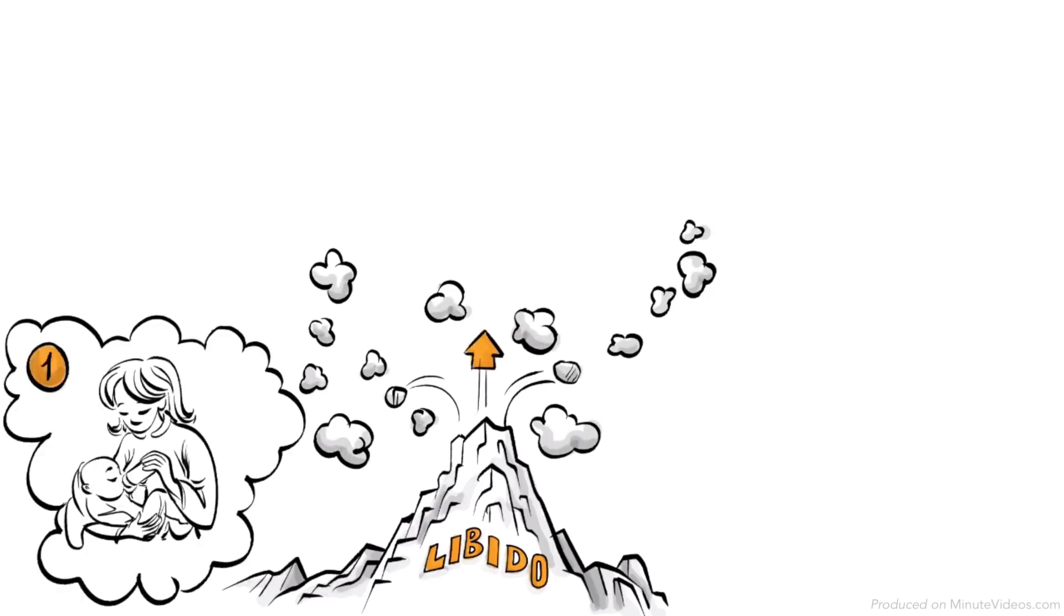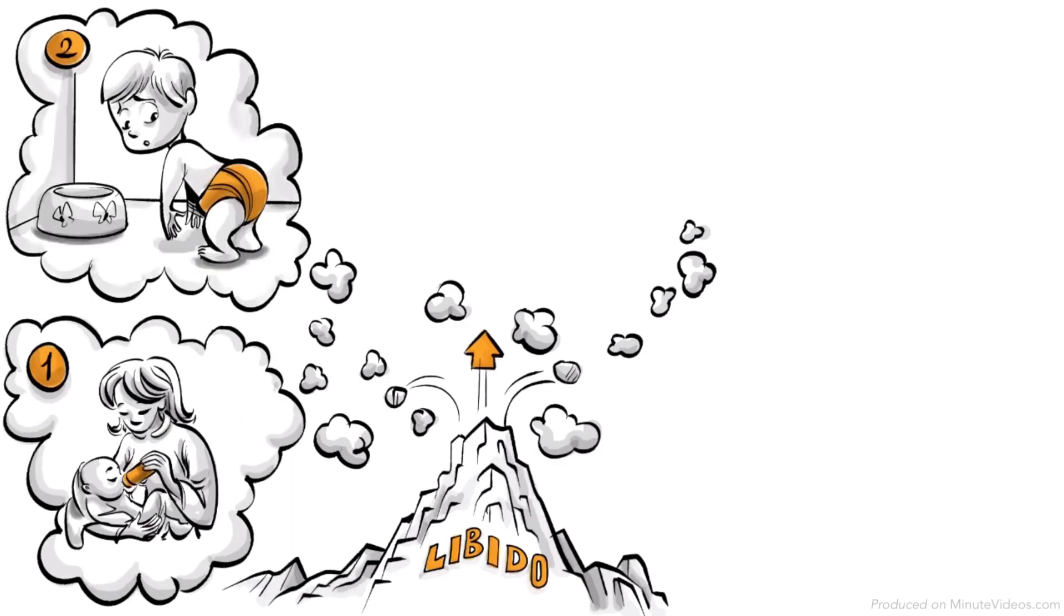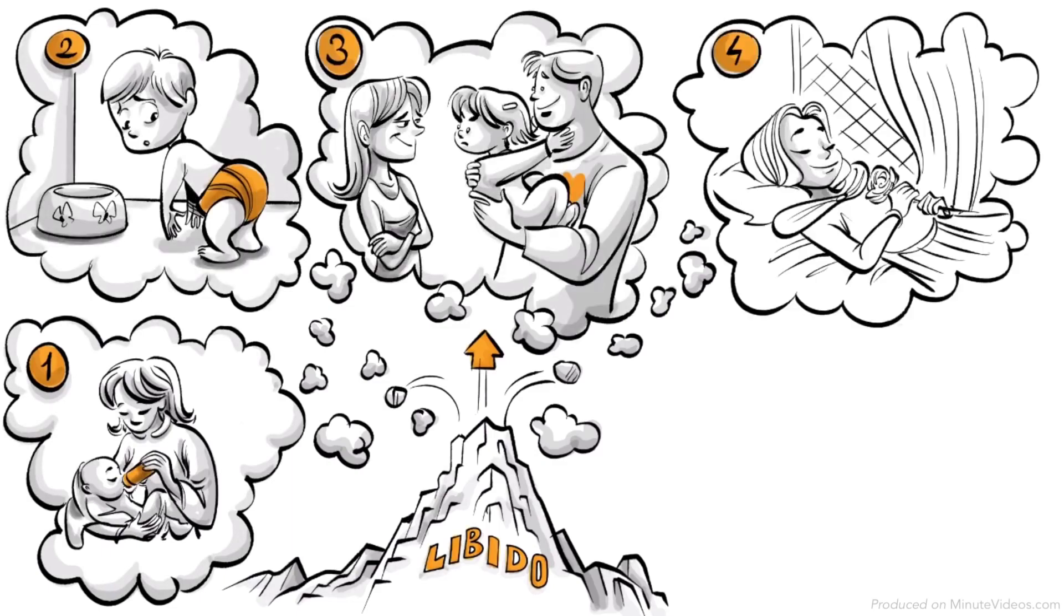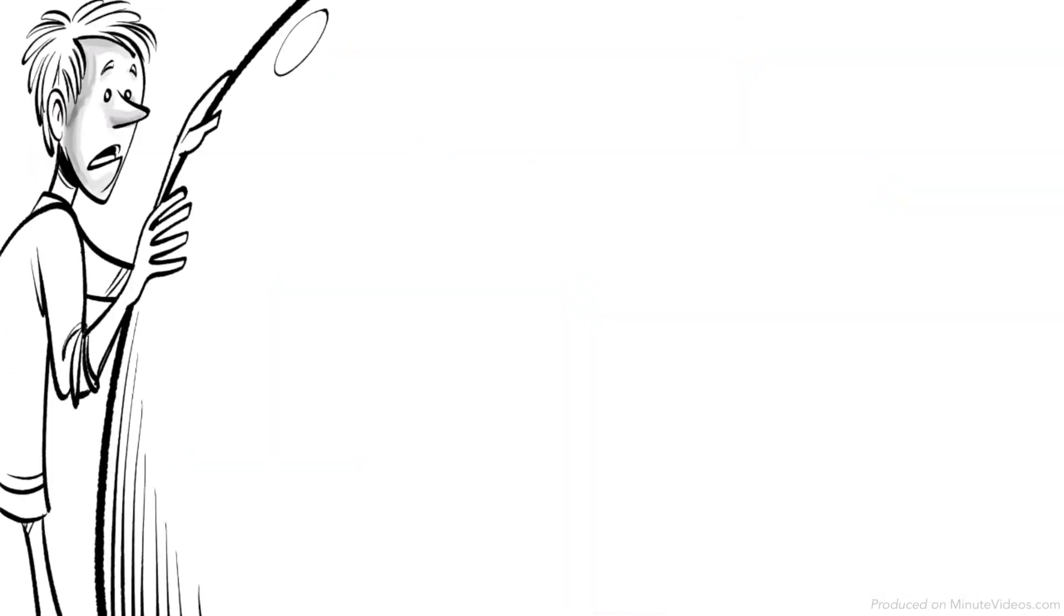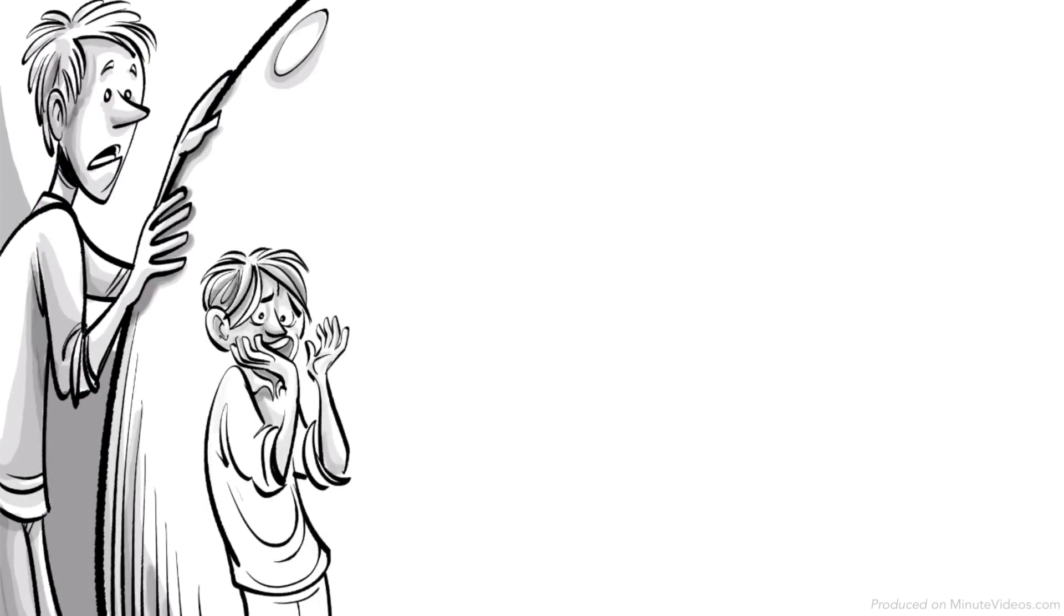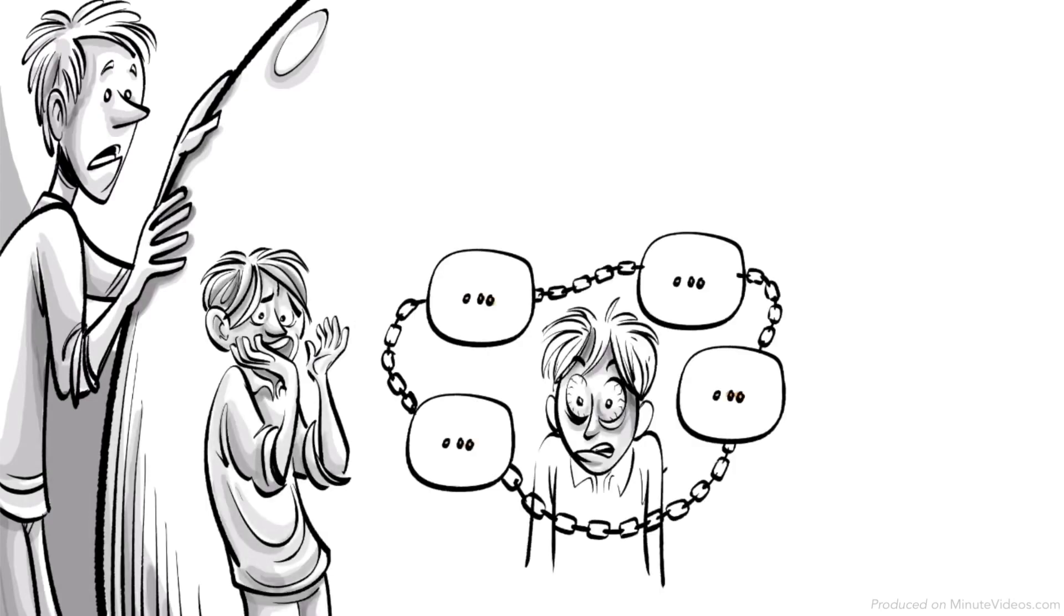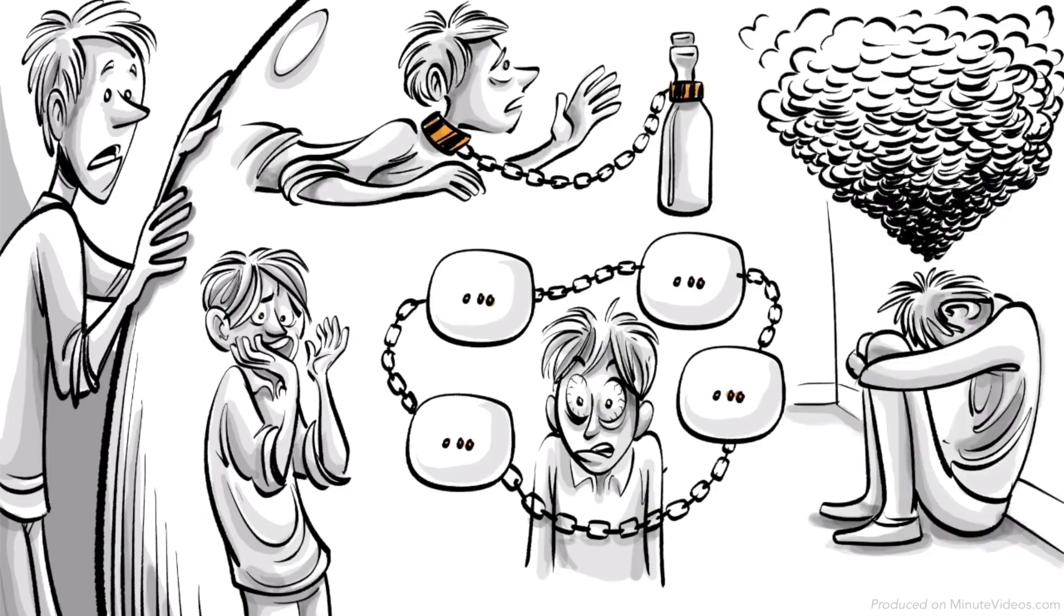The phases are called oral, anal, phallic, latency and genital. If our experience during any of these phases was traumatic we might develop fixations later in life such as neurosis, dependencies, addictions or depression.